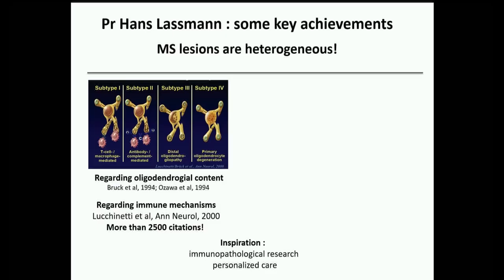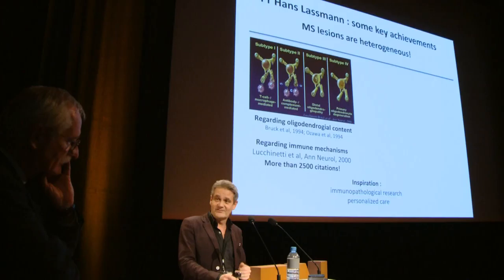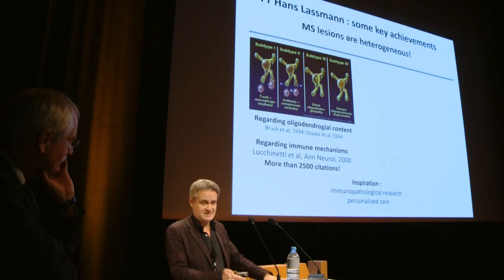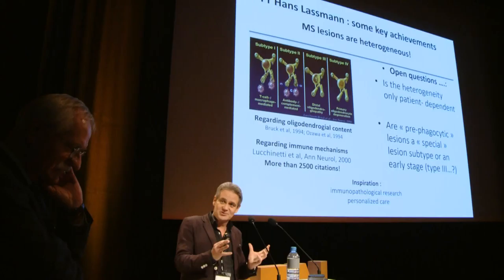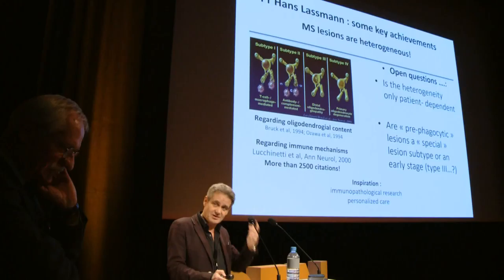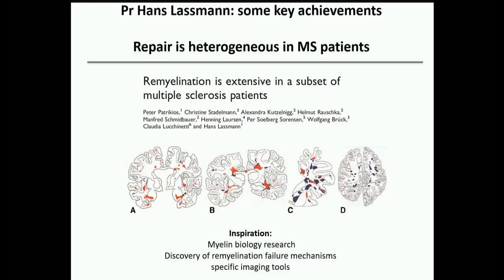Key seminal contributions from Lassmann include his description that MS lesions are very heterogeneous regarding myelin content, oligodendrocytes, and immune mechanisms — a paper cited more than 2,500 times. Open questions remain about whether this heterogeneity is patient-dependent or lesion-dependent, and what the prefagocytic lesions represent. This work inspired immunological research and thinking about personalized care.